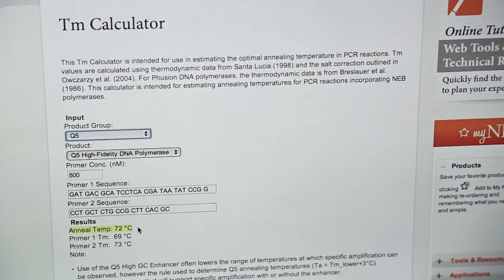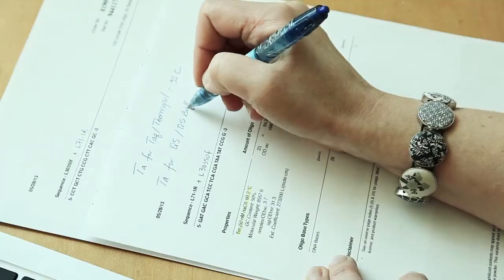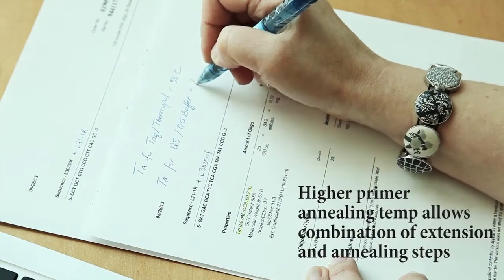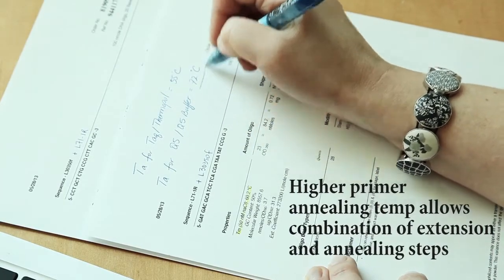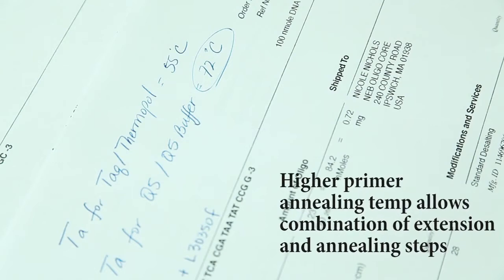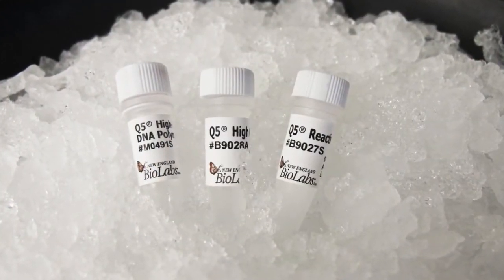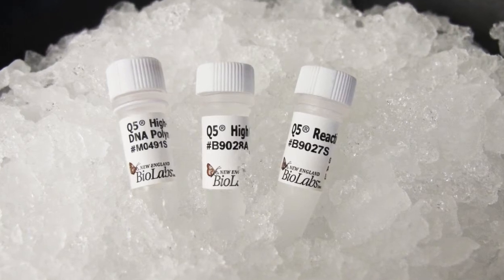First, primers are designed with higher annealing temperatures that allow for the combination of your extension and annealing temps. It's often referred to as two-step PCR. Next, polymerases that can tolerate fast extension times are added to your reaction.